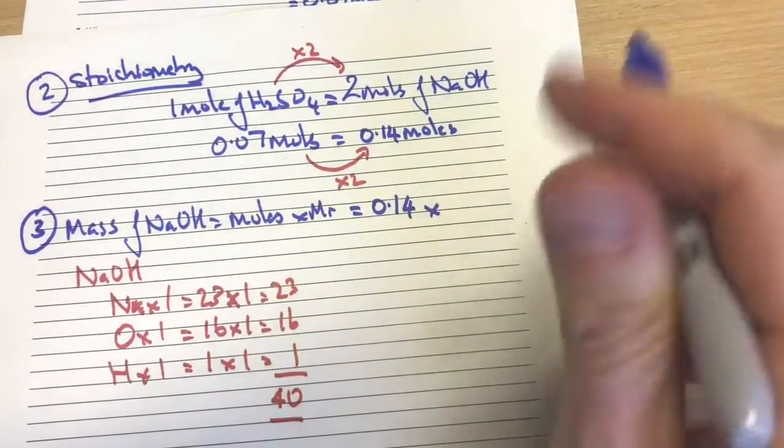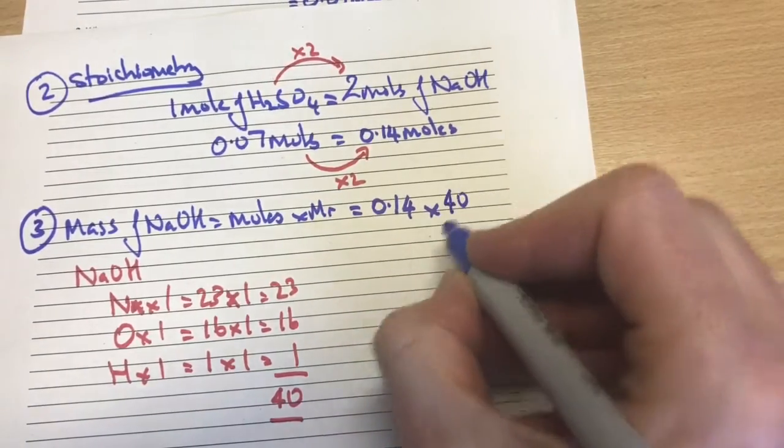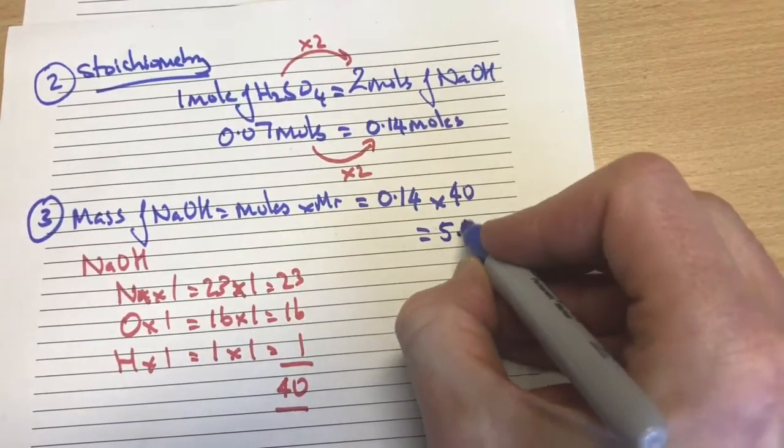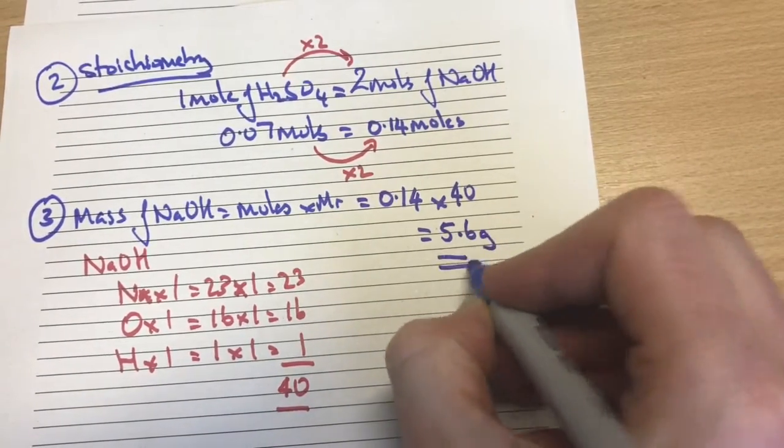So I'm going to transfer that 40 now into my equation. So I've now got 0.14 times by 40. And that's giving me an answer of 5.6. And the units are grams.